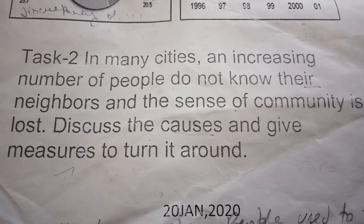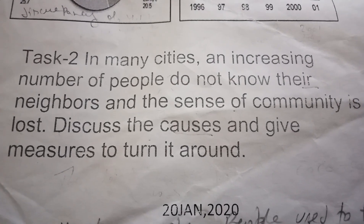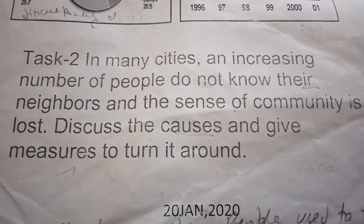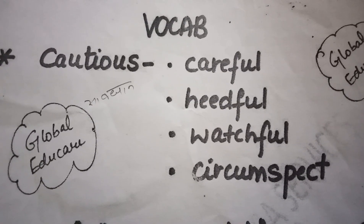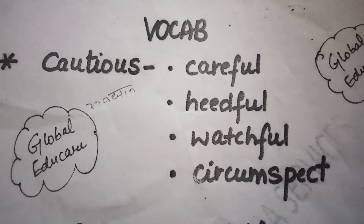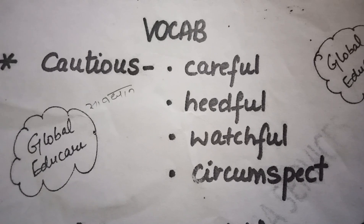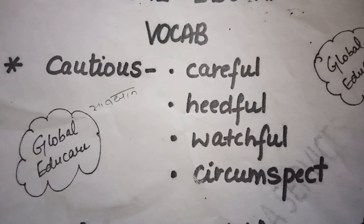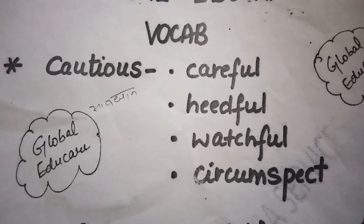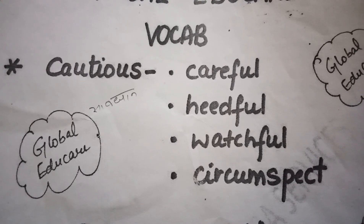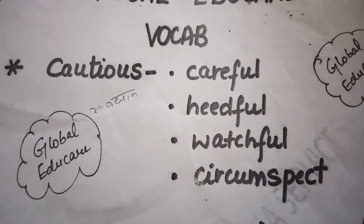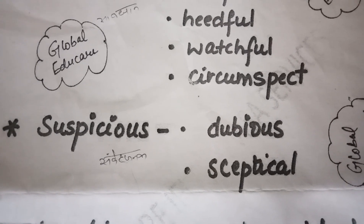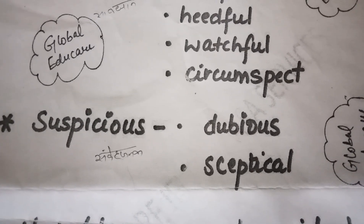So the first word to see and use carefully is 'cautious.' Be careful and watchful — circumspect. These words are used carefully. Also 'suspicious' — use these words carefully in your essay on this topic.